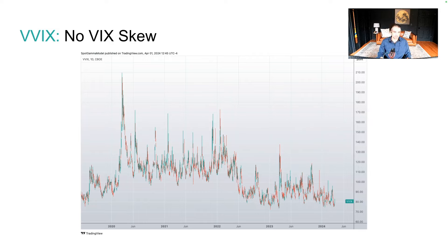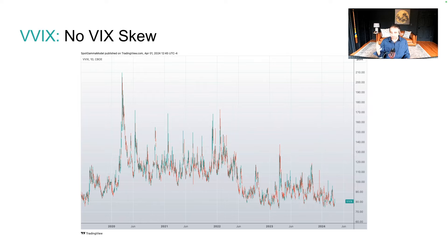The VVIX is the VIX of the VIX. If there was demand for out-of-the-money VIX calls, you would expect the VVIX to really spike up as demand for those out-of-the-money calls increases. That doesn't seem to be happening in this environment, suggesting — like the SDEX — there is no real big demand for tail hedges.